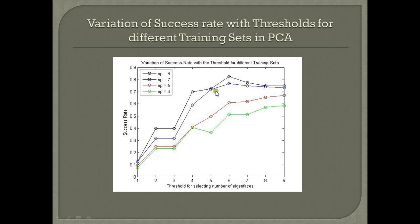This graph shows the variation of the success rate with the threshold for different training sets in the case of PCA. As previously discussed, as the threshold — the number of principal components — is increased, the performance increases. And as the number of training samples is increased, the performance also increases.